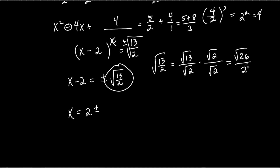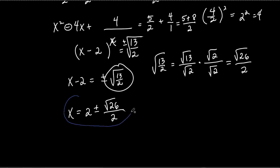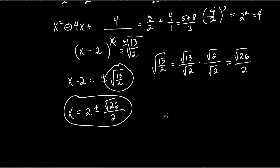The square root of twenty-six over two is the exact same thing as the square root of thirteen halves — you can test it in the calculator and the decimal is identical. This is a much better way to write it and this is the way I'll require you to write it; otherwise you won't get credit. So x equals two plus or minus the square root of twenty-six over two — that's your answer, let's circle it.